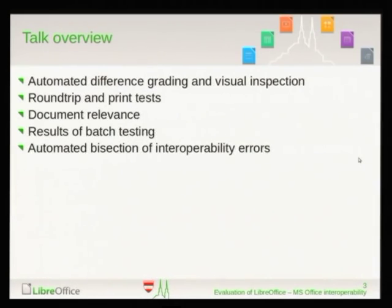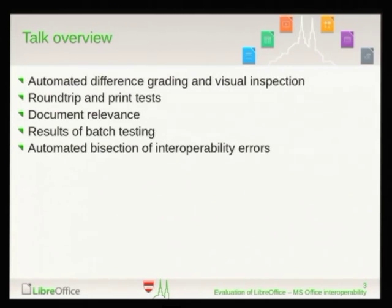So what will this talk be about? It will be about automatic difference grading of documents based on rendering into PDF, then visual inspection of such differences, round-trip and print tests, document relevance, some results, and at the end I will show how we can automatically bisect interoperability errors based on these measures.